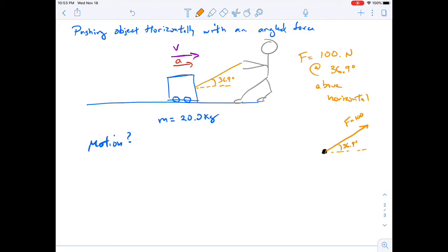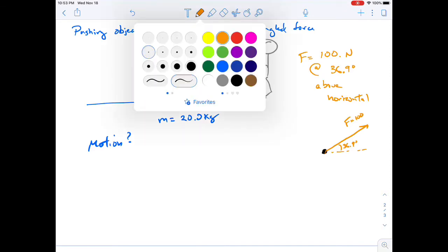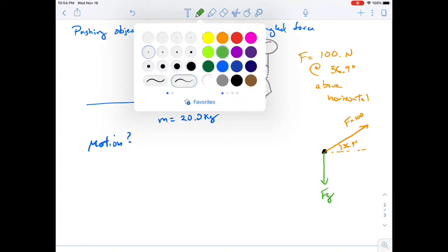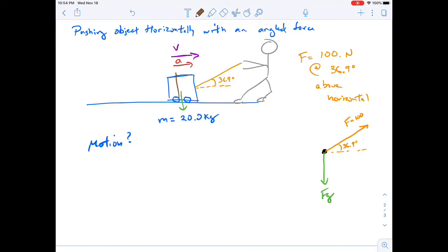We have other forces acting on this object. One force we always have is gravity, so gravity is acting downward. We can calculate that off to the side somewhere if we need to. We do have the normal force pushing up from the ground. In this case, we do not have a resistance force, so we don't have friction acting backwards.